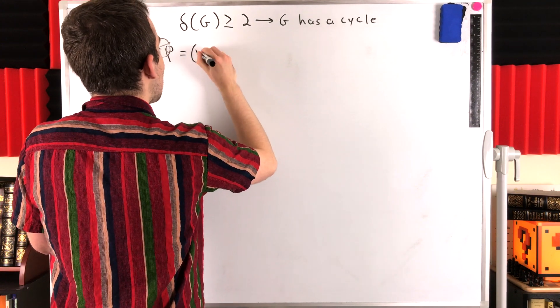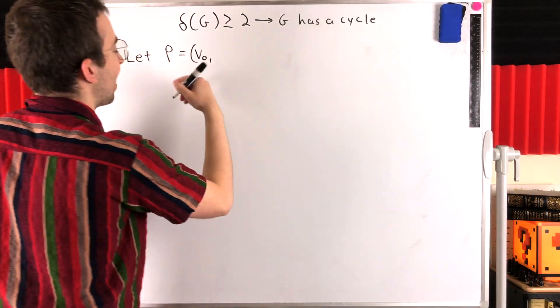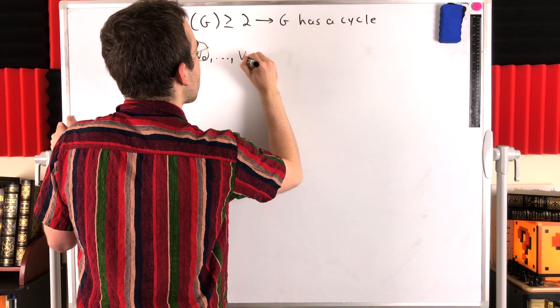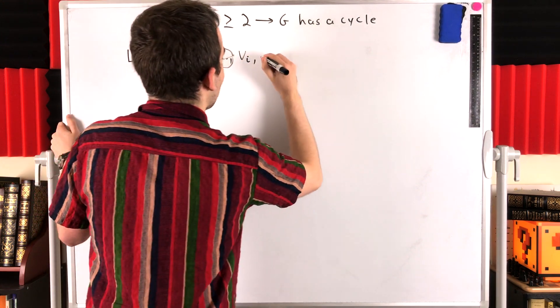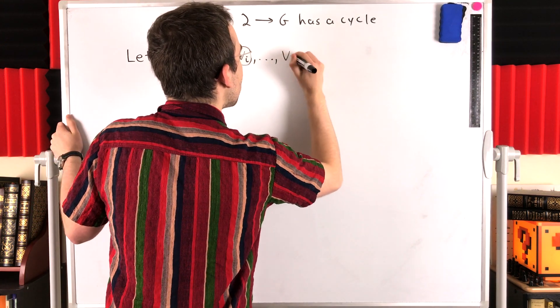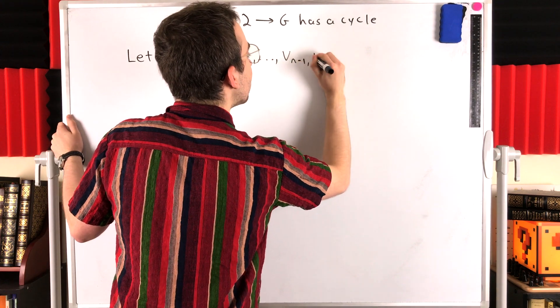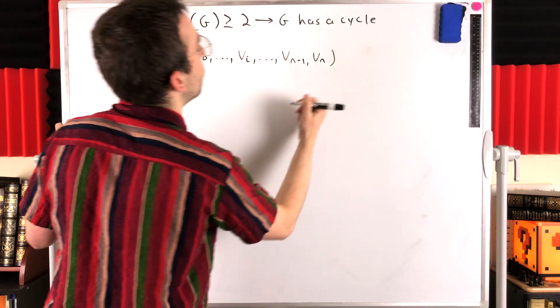We'll just name the vertices of P. We'll say it starts at V0. We'll let VI represent an arbitrary vertex on the path, and the path P ends with some final vertex VN.